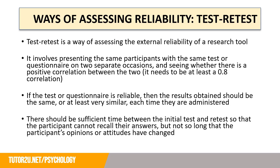So how can we assess the reliability of something? First of all, we're going to look at the test-retest method. Test-retest is a way of assessing the external reliability of a research tool. It involves presenting the same participants with the same test or questionnaire on two separate occasions and seeing whether there is a positive correlation between the two. If the test or questionnaire is reliable, then the results obtained should be the same, or at least very similar, each time they are administered. There should be sufficient time between the initial test and retest so the participant cannot recall their original answers, but not so long that the participant's opinions or attitudes might have changed.